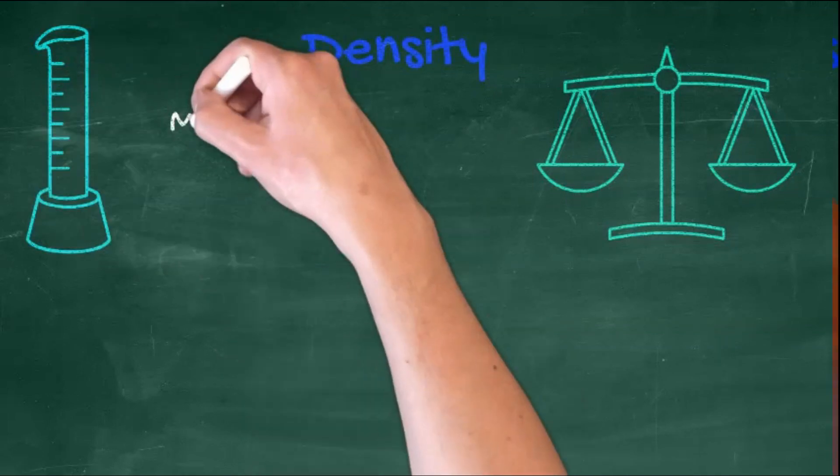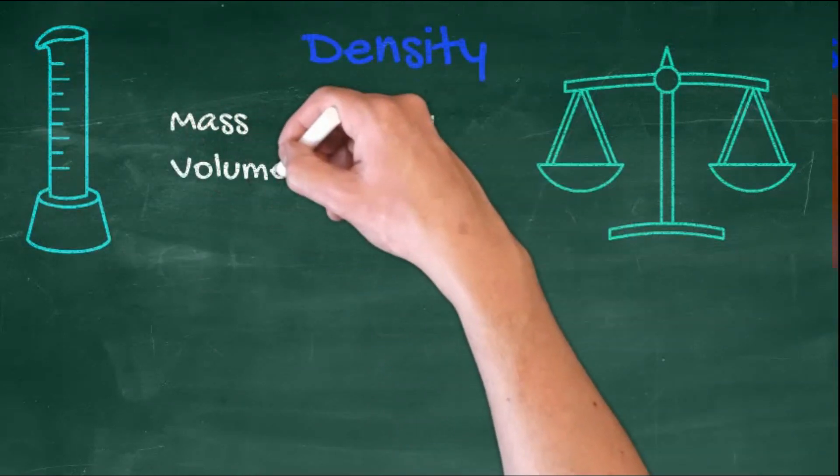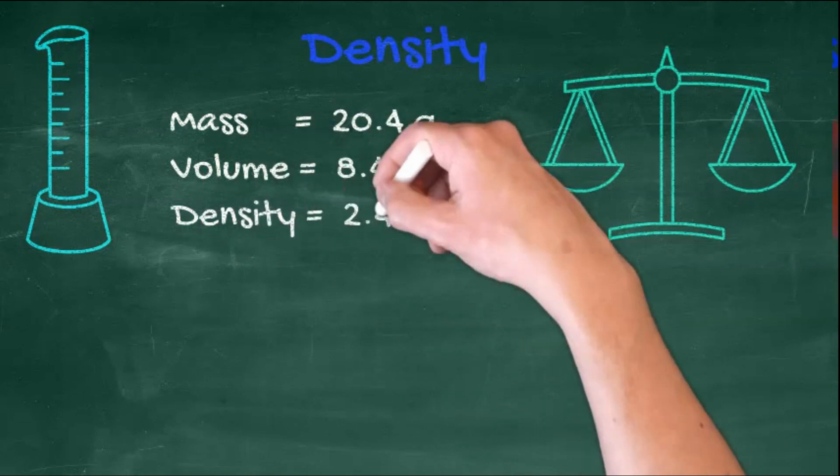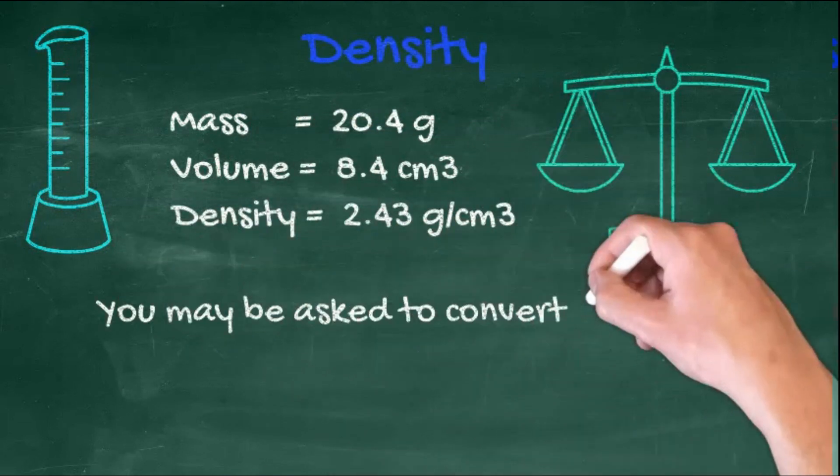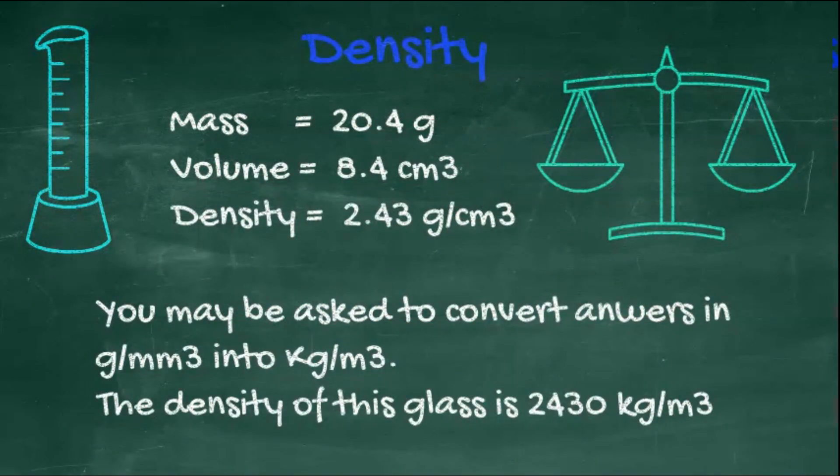As we said before, density can be calculated from mass divided by volume. So in this case, the density of the glass was 2.43 grams per centimeter cubed.